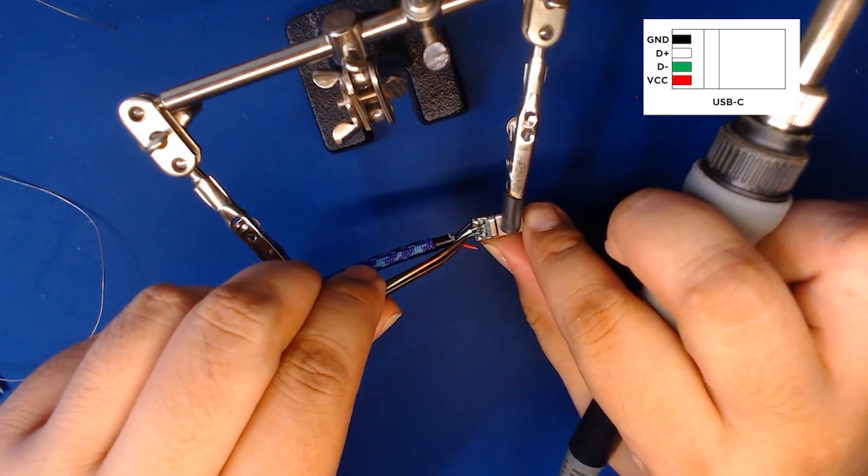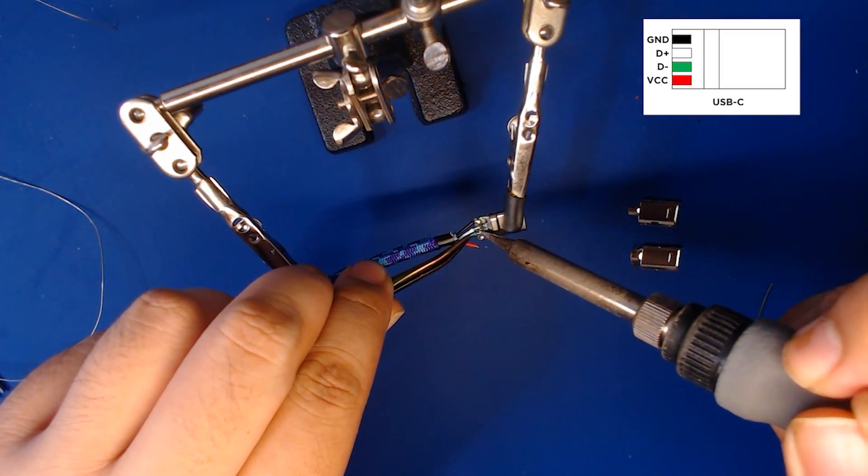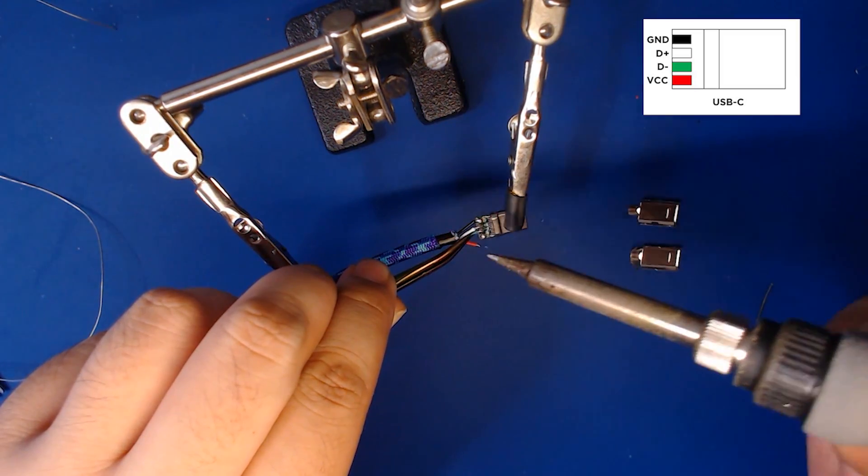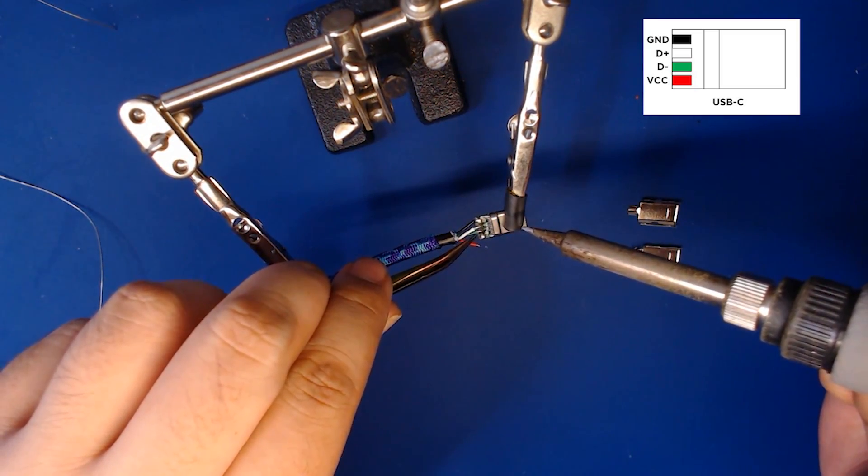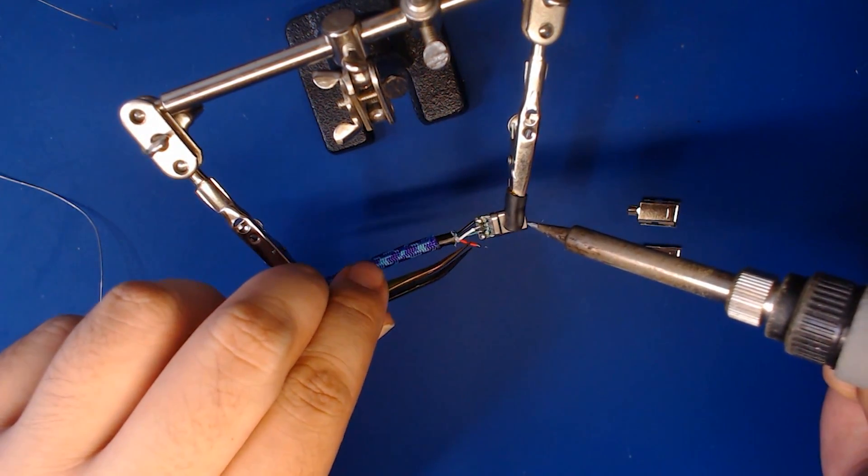As I finish up this connection here, as a quick tip, I usually heat the solder itself on the contact point and then kind of pull the wire into it to create my solder joint.